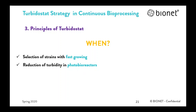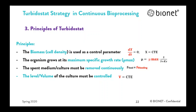The turbidostat is commonly used for the selection of strains and the degradation of toxic waste where nutrient limitation is not desirable. It's also routinely used to avoid the washout effects that are more common in chemostat systems, and to produce cells of approximately uniform morphology and composition over prolonged periods — also for the reduction of turbidity in photobioreactors where the light must reach the cells. Therefore, we can summarize the principles of the turbidostat as: the biomass cell density is used as a control parameter, and the goal is to maintain the concentration constant at the maximum specific growth rate. The spent medium must be removed continuously, keeping the level of the culture constant, and the volume must be controlled.